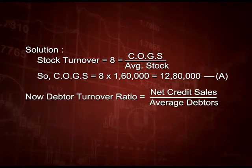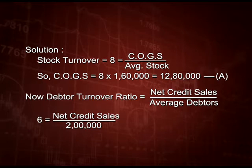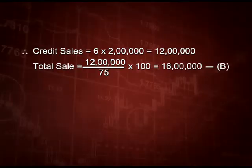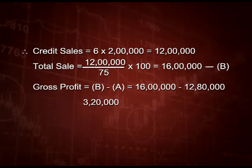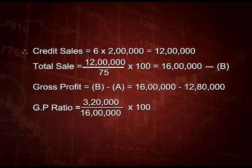Debtor turnover ratio equals net credit sale upon average debtor. So 6 equals credit sale upon 2,00,000; cross multiplying gives credit sale as 12,00,000. Total sale will be 12,00,000 divided by 75 into 100, making it 16,00,000 — take it as B. Gross profit is sales minus cost of goods sold: B minus A equals 3,20,000. GP ratio is 3,20,000 divided by 16,00,000 into 100, giving 20 percent — that is the final answer.